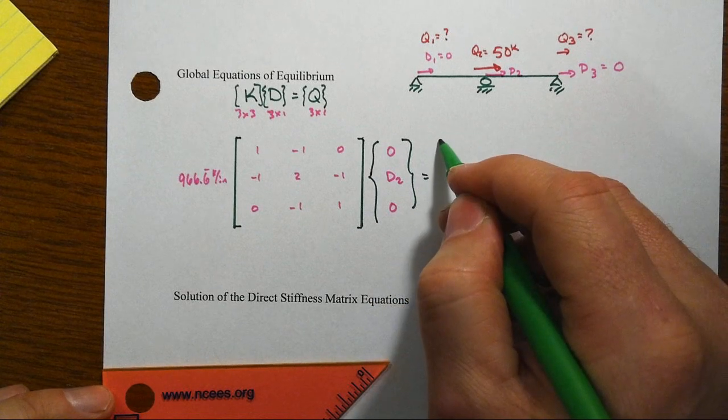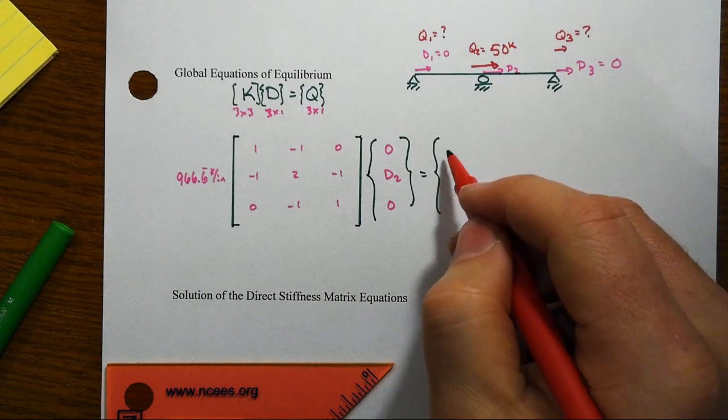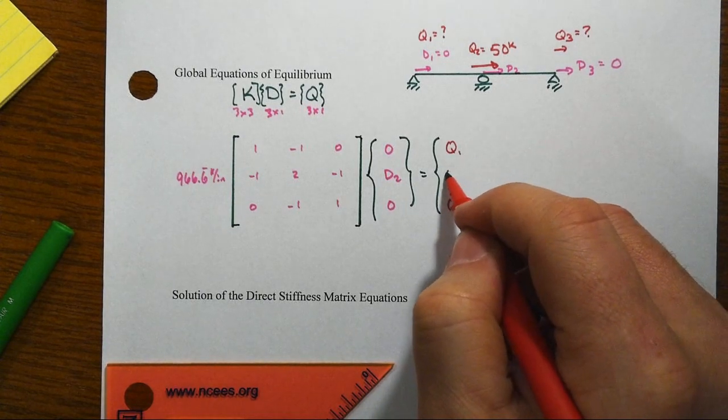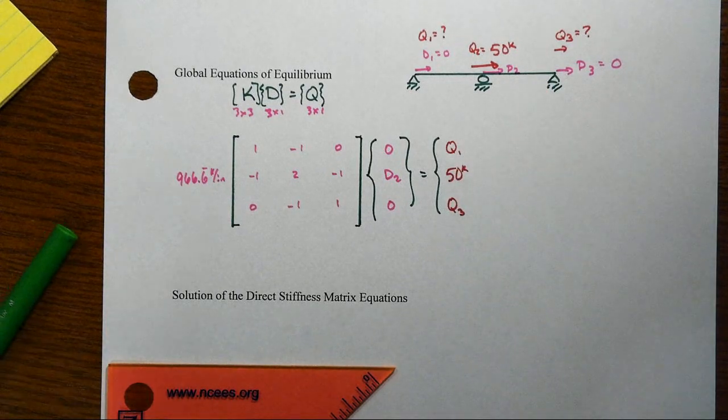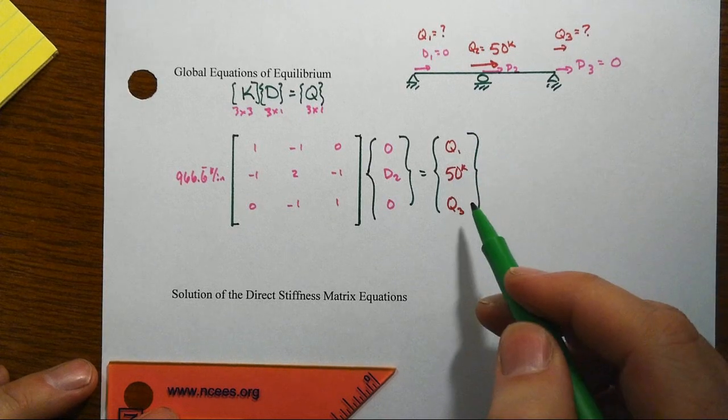That will equal a nodal force vector where we don't know Q1, we don't know Q3, but we do know that Q2, the applied force, is 50 kips.